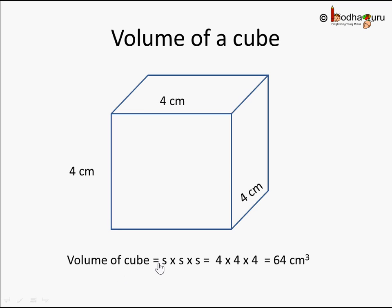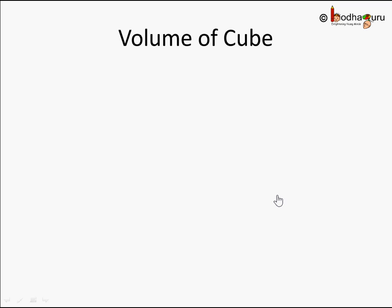Since each side of a cube is the same, the volume is side × side × side, that is 4 cm × 4 cm × 4 cm, which equals 64 centimeter cube. That's where the name 'cube' comes into the picture — centimeter multiplied three times gives us cm³. So the formula for volume, which we already know, is volume = side × side × side.